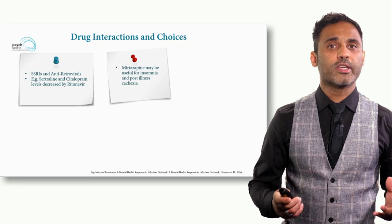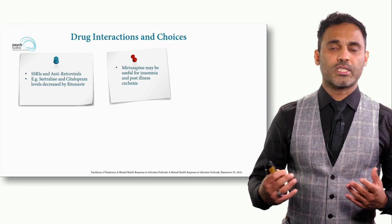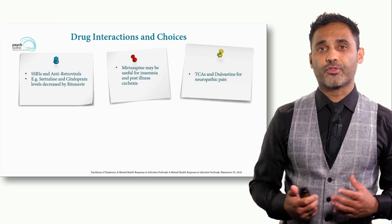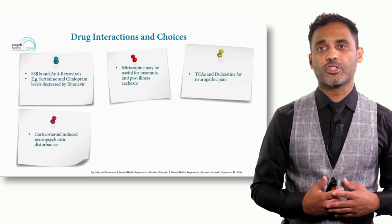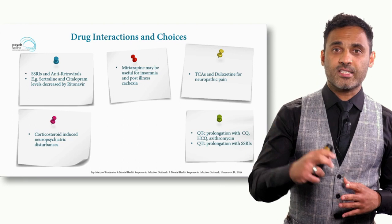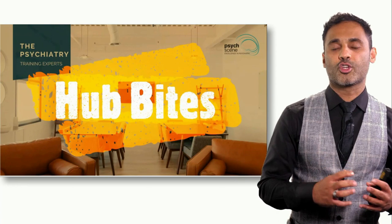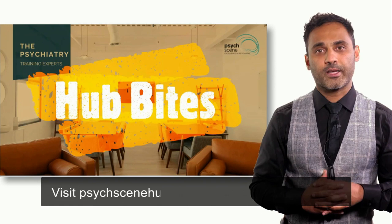Regarding drug interactions: citalopram levels are decreased by ritonavir. Mirtazapine may be used for insomnia and post-illness cachexia. Tricyclics and duloxetine may be useful for neuropathic pain. Corticosteroid-induced neuropsychiatric disturbance may need management. Importantly, QTc prolongation is a concern with chloroquine and hydroxychloroquine, especially in combination with azithromycin. High-dose SSRIs — particularly escitalopram and citalopram — can further prolong the QTc. I hope this has given you a good understanding of how SARS-CoV-2 may affect the brain and the role of the psychiatrist in this pandemic. Take care and stay safe.